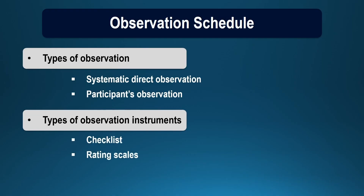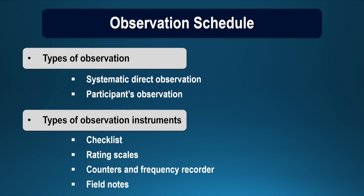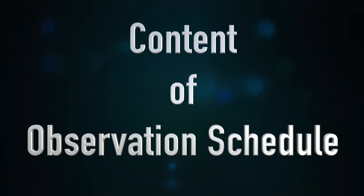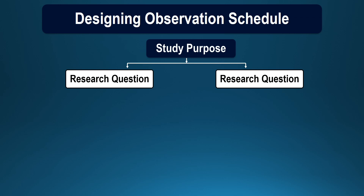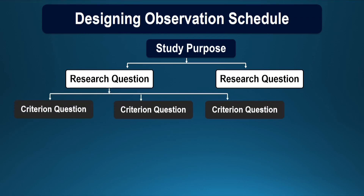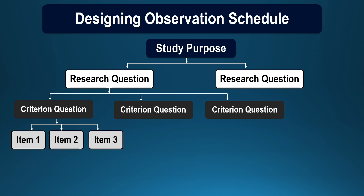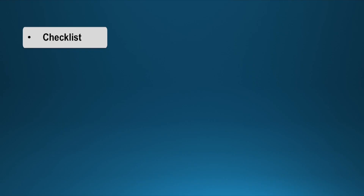An observation schedule can include items or questions in the form of checklists, rating scales, counters or frequency recorders, and the researcher can also take field notes. To arrive at the content of any observation schedule, the same process is followed: stating the purpose of study, writing the research questions, breaking down the research question into criterion questions, and then for each criterion question identifying the item or question to be included in the observation schedule. Let's have a quick look at when checklists are to be included.